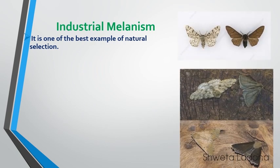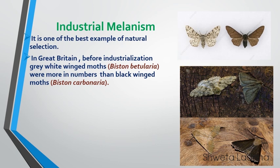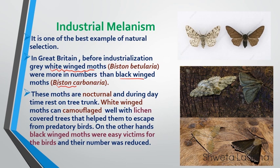Industrial melanism occurred in Great Britain. Before industrialization, there were two types of moths: Biston betularia, which was a white-winged moth, and Biston carbonaria, which was a black-winged moth. Before industrialization, there was no pollution — it was a fresh environment with lots of lichen growing on tree trunks. Both moths are nocturnal, so during the daytime they rested on trees. The white-gray moth could easily camouflage with the lichen that covered the trees, and therefore could escape from predatory birds, so their number increased. But the black-winged Biston carbonaria were easily exposed and became easy victims for birds — their population reduced.